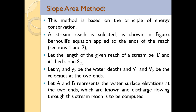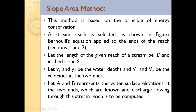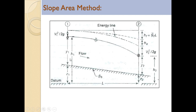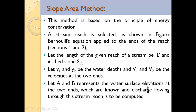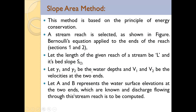Let the length of the given reach of a stream be L and its bed slope be S₀. y1 and y2 are water depths, v1 and v2 are the velocities at the two ends. A and B represent the water surface elevations at the two ends, which are known. The discharge flowing through the stream reach is to be computed. Applying Bernoulli's equation between the two sections: z1 + y1 + v1²/2g = z2 + y2 + v2²/2g + total head loss.